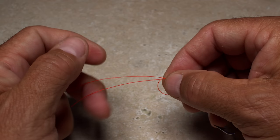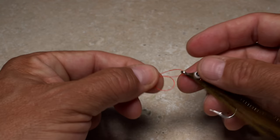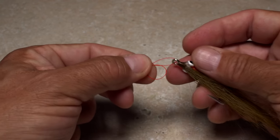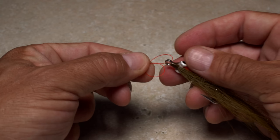Get the tag oriented parallel to the running line. You should be left with two loops: one through the eye of the fly and the other formed by the overhand knot.